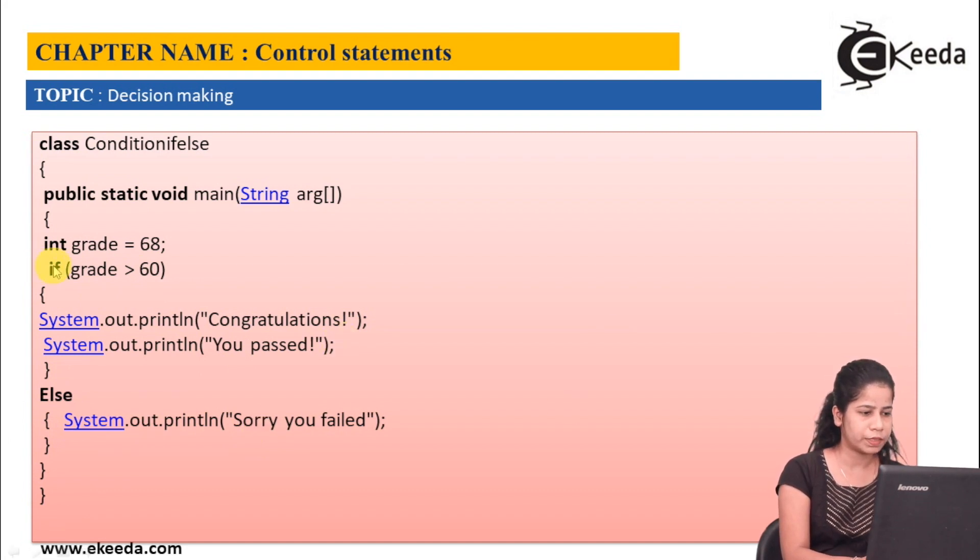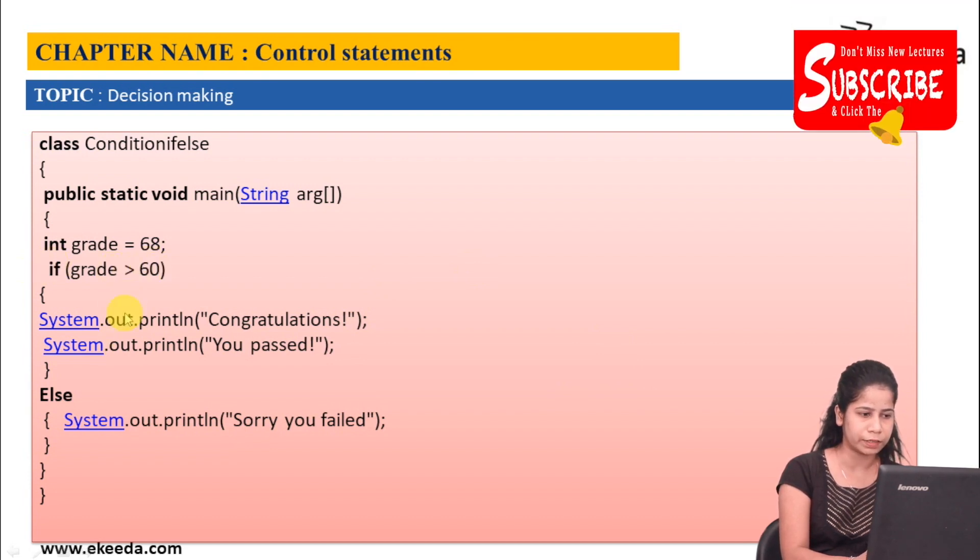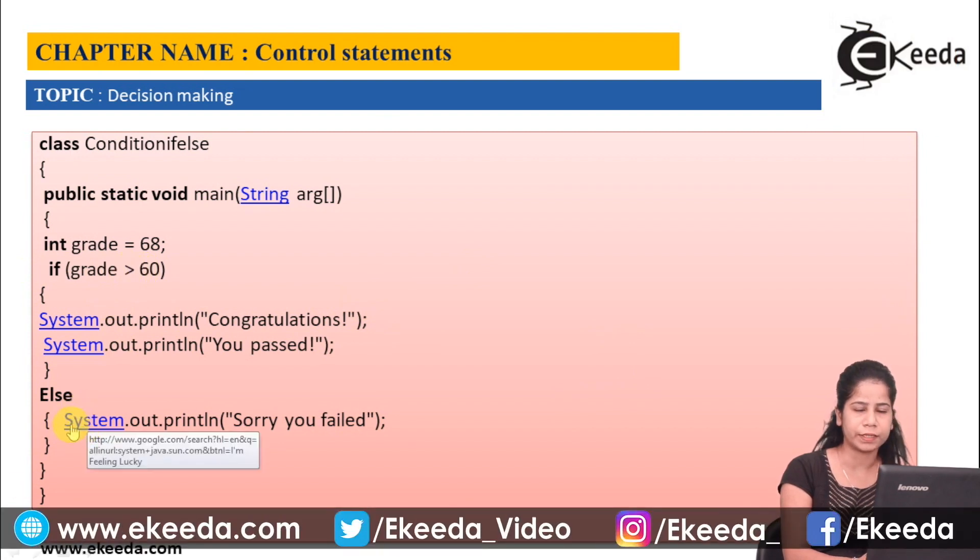So basically this condition, if it is true, then this block will get executed. If this condition is false, then else block will get executed.